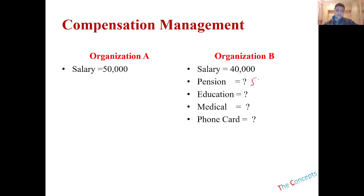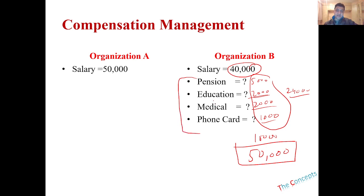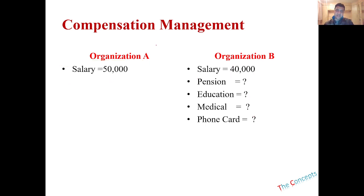If 5,000 goes to pension, they also add approximately 2,000 to education reimbursement, making roughly 24,000 rupees a year in savings. Then there's a medical allowance or insurance of 2,000 rupees per person and a phone card of around 1,000 rupees. All this constitutes about 10,000 extra on top of the 40,000 salary. So in total, this organization is also spending around 50,000 rupees, but they are adding benefits and making the job very attractive while only paying 40,000 as salary. This is how compensation is managed by the HR department.